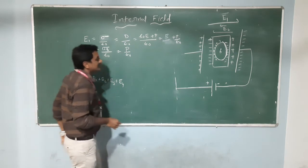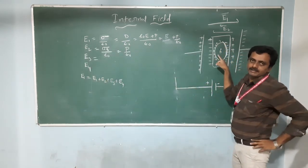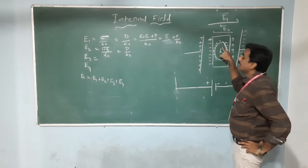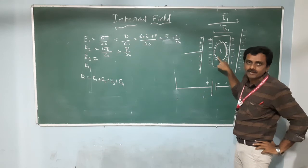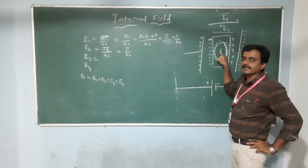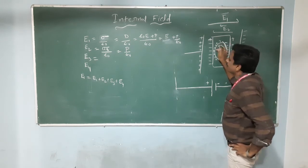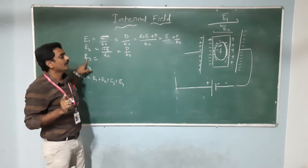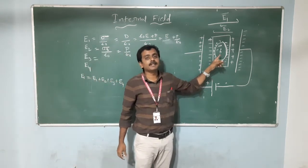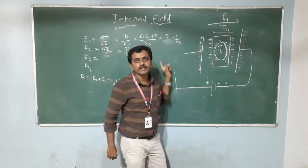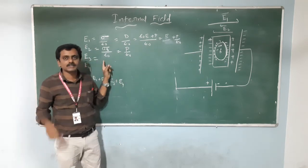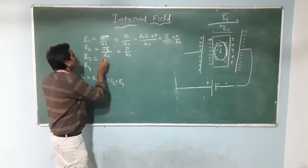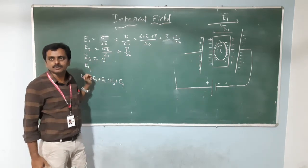Now E3: inside the material we are assuming one symmetrical spherical cavity. In that symmetric cavity, many dipoles are present — each atom acts as one dipole. In case of a symmetric shape, the resultant dipole momentum is zero. Therefore, the total electric field E3 acting on that point is zero.